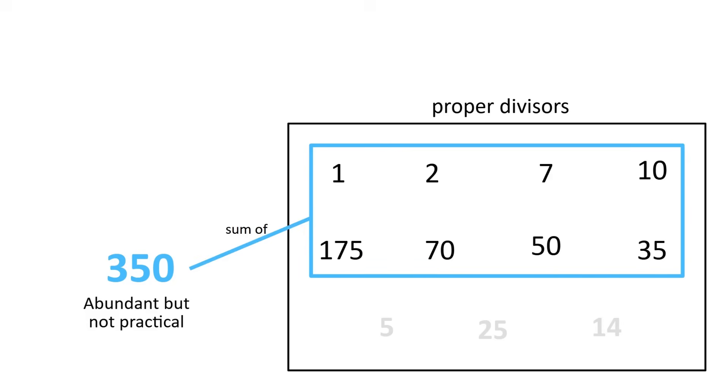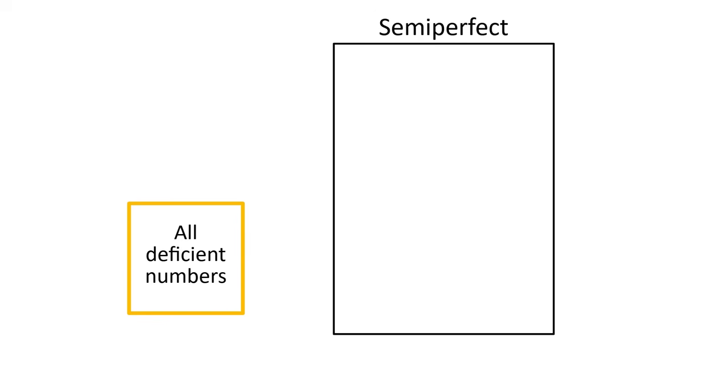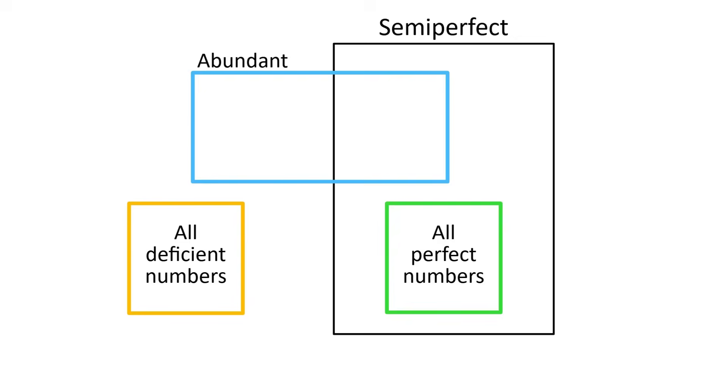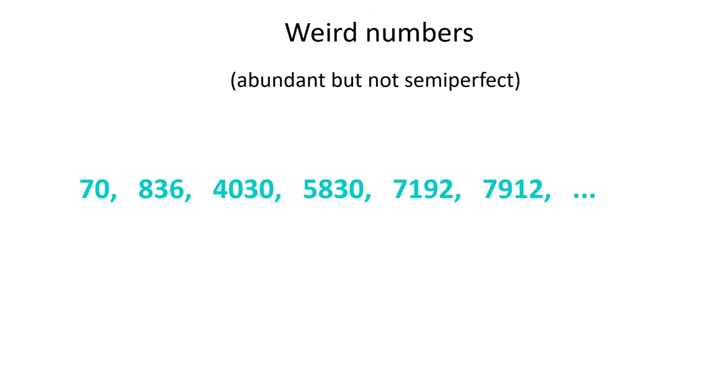A semi-perfect number, also called pseudo-perfect, is one where there's a subset of the proper divisors of n that adds up to exactly n. Deficient numbers can't be semi-perfect, and perfect numbers are automatically semi-perfect, so the term mainly applies to abundant numbers. As it turns out, abundant numbers are almost always semi-perfect. The rare exceptions are 70, 836, 4030, and so on. This is the one and only sequence of weird numbers.